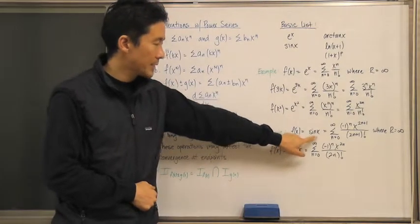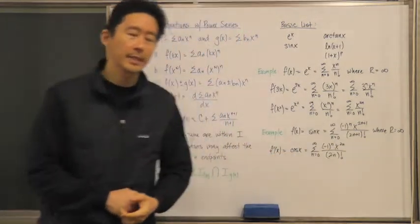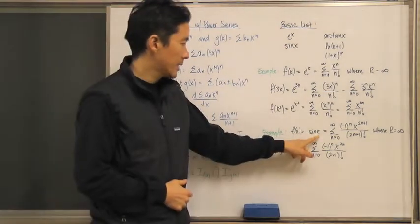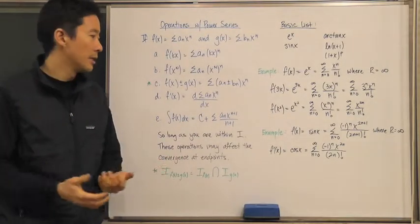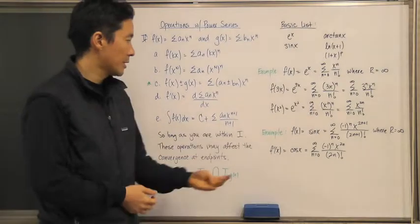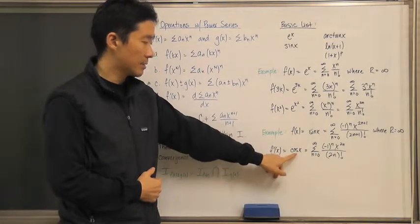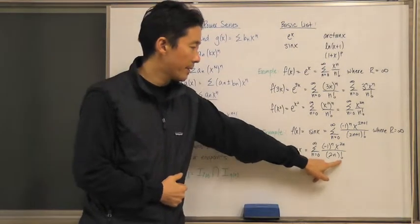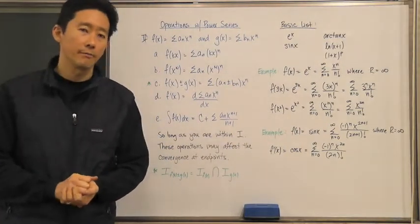Let's look at another example: f(x) = sin(x) with its known power series expansion, where again the radius of convergence is infinity. To find the power series expansion of cos(x), don't start from scratch. Instead, take f'(x), the derivative of sin(x), which is cos(x), and differentiate the power series term by term to get the power series expansion of cos(x) for all values of x.